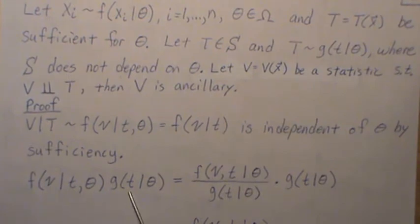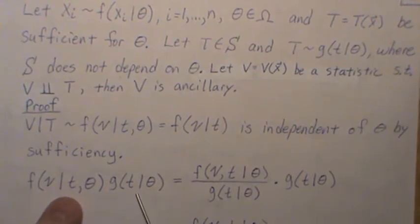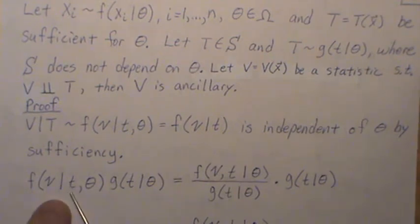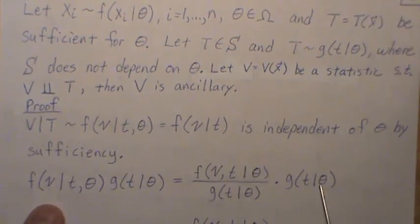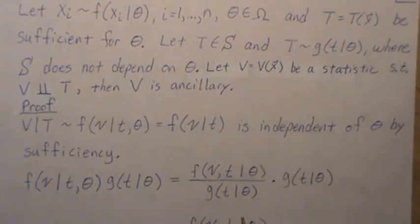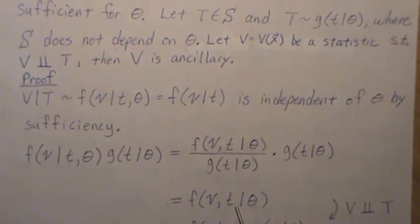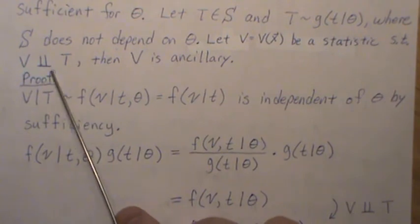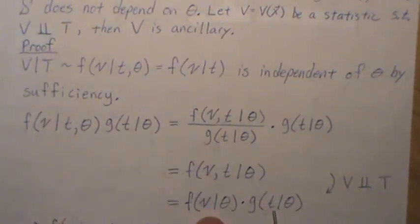Now let's look at this product of functions here. Now this is a conditional, so it can be thought of as the intersection divided by the marginal, and that's what this is. So those are divided, cancel, and we're left with this. But by assumption, v and t are independent, so we can break that apart, and that's what we get here.